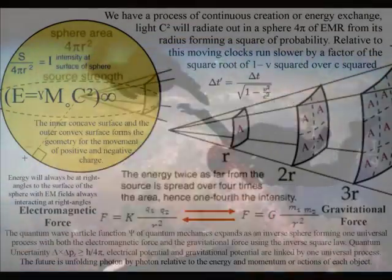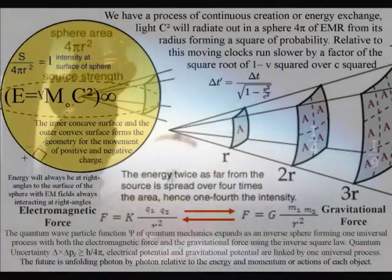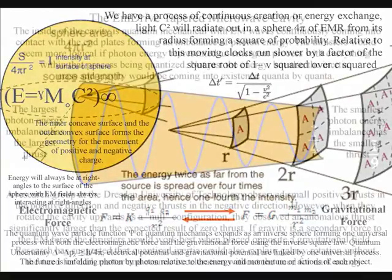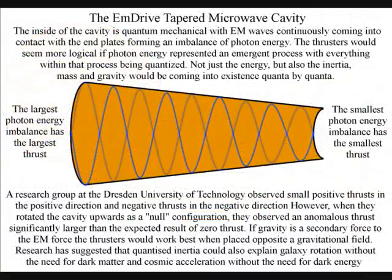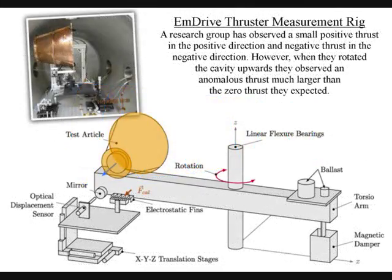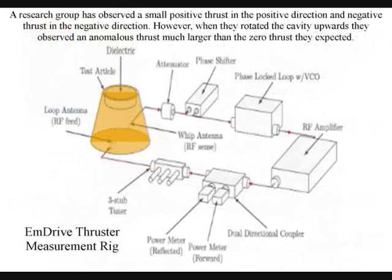Therefore, the electromagnetic interaction within a tapered cavity is linked to gravity. This has been seen in experiments. A research group at Dresden University of Technology observed a small positive thrust in the positive direction and negative thrust in the negative direction. However, when they rotated the cavity outwards, they observed an enormous thrust, much larger than the zero thrust they expected.